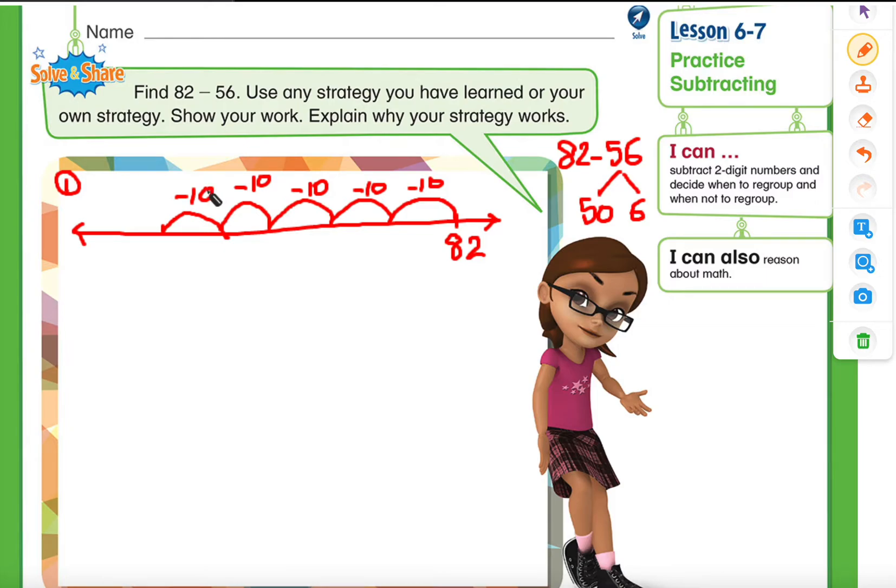That means I am subtracting 5 tens. Now I need to show 6 ones. I can break apart into 5 ones and 1 one—5 plus 1 is 6. So I can show the jumps of 5 and 1. So let's take a look. This is my jump of 5, and then I have a jump of 1.